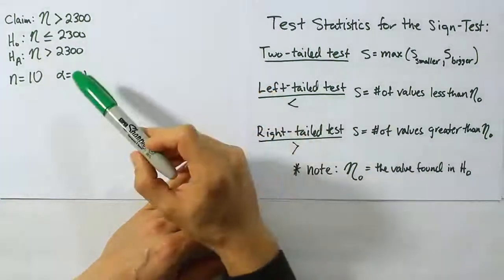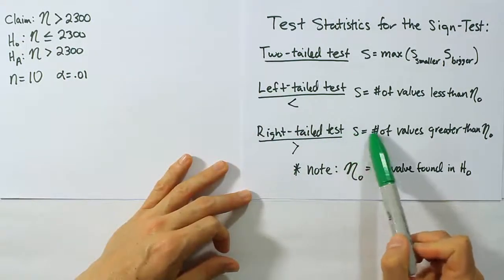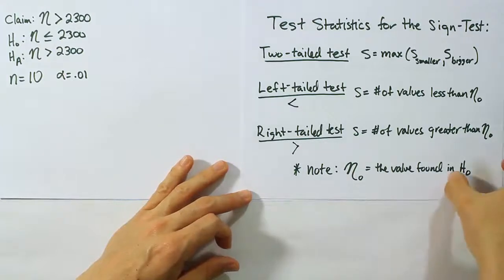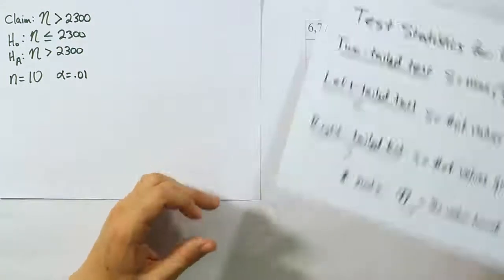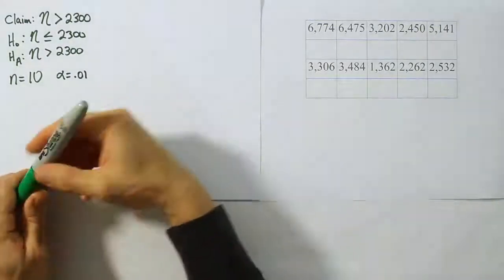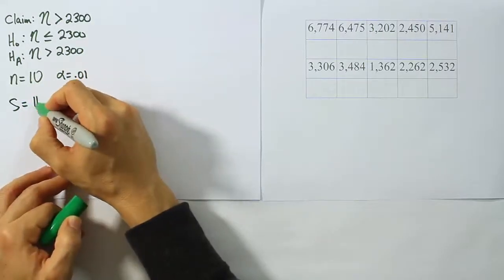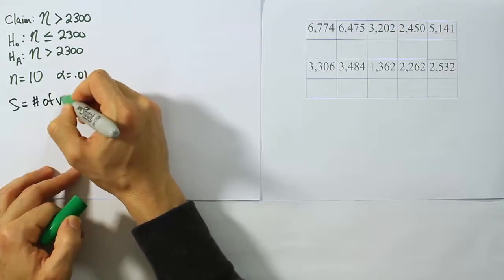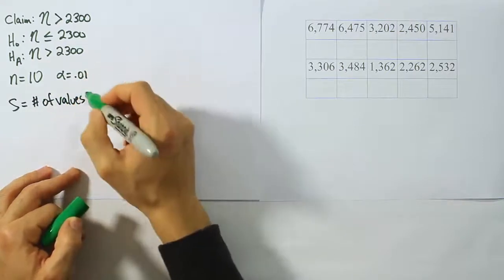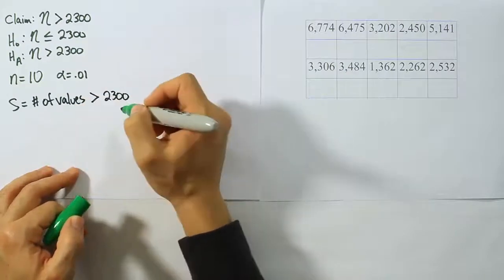In this case, we have a right-tailed test because our symbol is greater than. So S is going to be the number of values greater than η naught. So let's try to remember that and keep that in mind. For our test, we're going to say that S is equal to the number of values greater than 2300. That's our test stat.